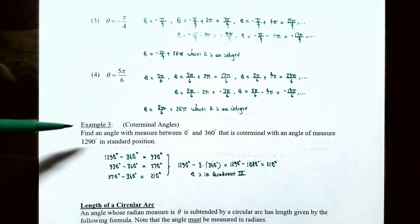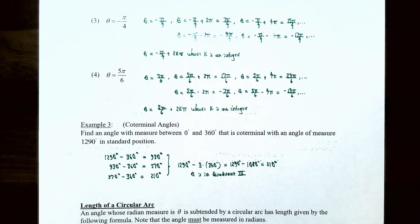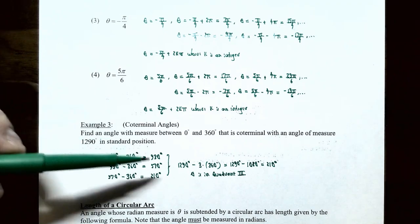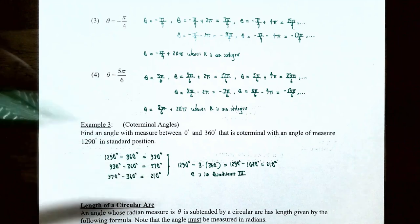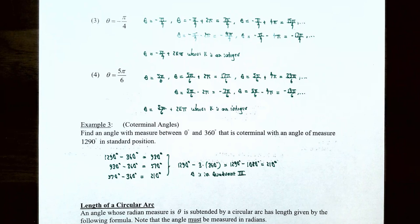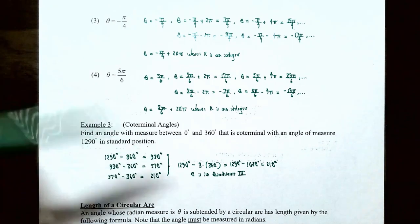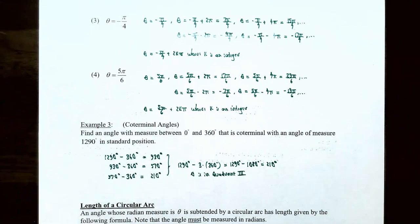Example three: find an angle between 0 and 360 degrees coterminal with 1290 degrees in standard position. Since 1290 degrees is more than one revolution, subtract 360 repeatedly: 1290 minus 360 equals 930 degrees; 930 minus 360 equals 570 degrees; 570 minus 360 equals 210 degrees. Now 210 is less than 360, so 210 degrees is coterminal with 1290 degrees — equivalent to subtracting three full revolutions. Theta is in quadrant three.